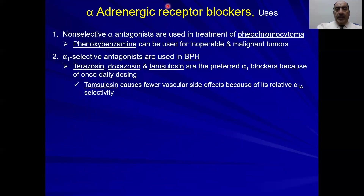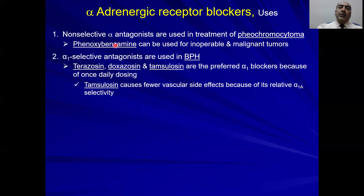These drugs are used specifically in the treatment of hypertension in patients with pheochromocytoma. Pheochromocytoma is a tumor in the adrenal medulla that secretes high amounts of norepinephrine and epinephrine, with subsequent severe hypertension. Here you can use phenoxybenzamine — as discussed last time, it is an irreversible alpha blocker that binds to the alpha receptor and does not dissociate, so its effect is very prolonged, making it very effective for these patients.